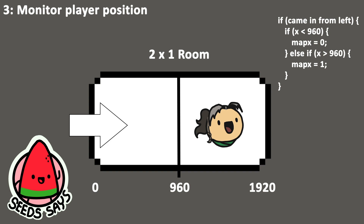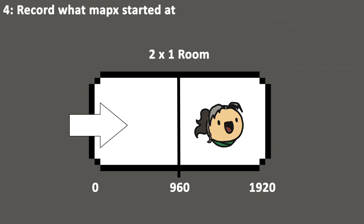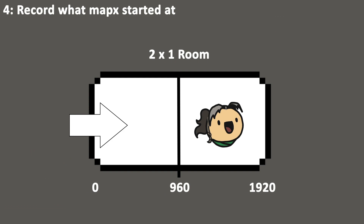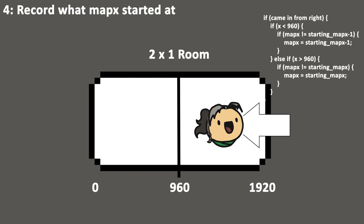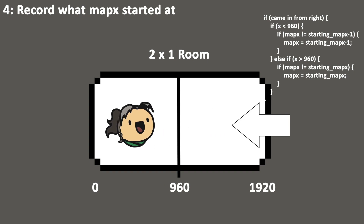But what happens if you go to the right side of the room and then go back to the left? We add another variable: starting mapX. This variable remembers what the mapX was when we first entered the room. So we say: if our x is less than 960, set our mapX to our starting mapX if it's not already. Now if we came in through the right side, this is just mirrored — if x is greater than 960, keep mapX the same, and if x is less than 960, subtract 1 from it.